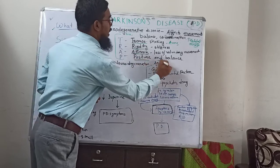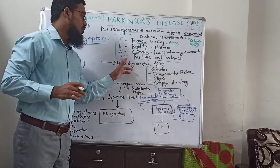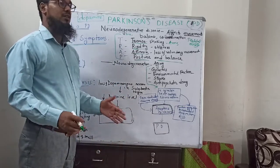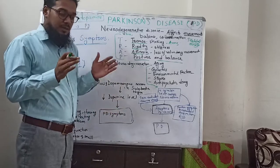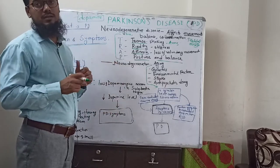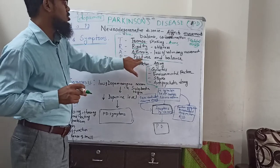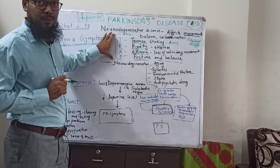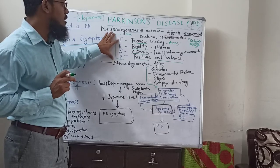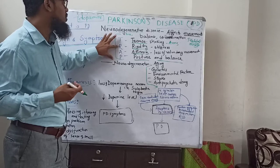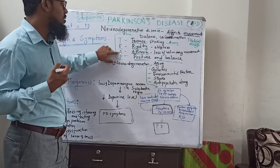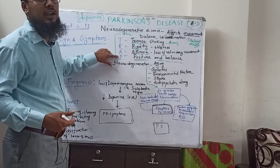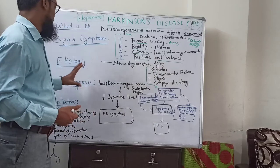P means posture and balance — posture and balance will become imbalanced. One cannot stand in a particular position; they cannot sit in a particular posture. Loss of posture and balance occurs. So these are the main signs and symptoms of Parkinson's disease: T means tremor (shaking), R means rigidity, A means akinesia (loss of movement), and P means imbalanced posture and balance.